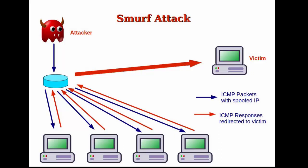The smurf attack is a denial of service attack, or DoS attack, which is commonly used to take down a system completely. In a smurf attack, an attacker creates lots of ICMP packets with the intended victim's IP address as the source IP, and broadcasts those packets in a computer network using an IP broadcast address.